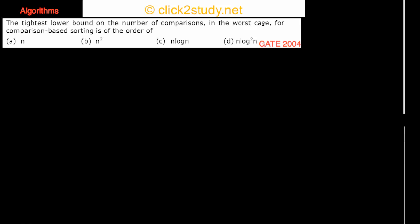We come to our next question: the tightest lower bound on the number of comparisons in the worst case for comparison-based sorting. In this question there are several key terms: tightest lower bound, number of comparisons, worst case, and comparison-based sorting.